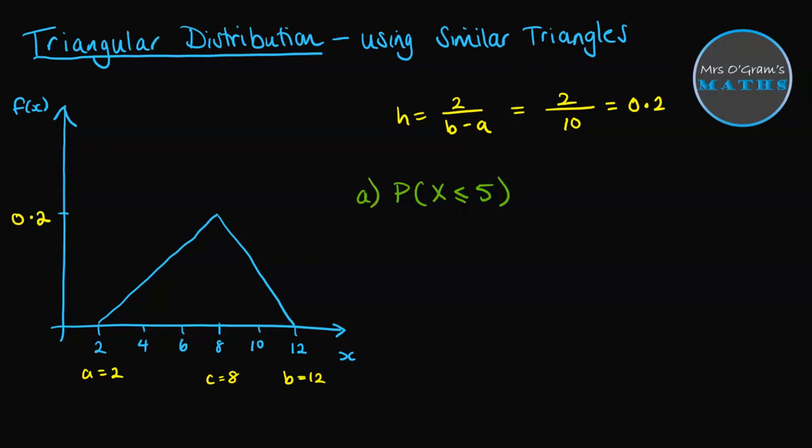All right, so let's go with this first question. What is the probability of x being less than or equal to 5? So here we've got a 5. We need to find out what that height is. We could use the formula that you looked at on the previous video, but let's take a look at how we could do this with similar triangles instead. So we have this height here, which is 0.2. We need to work out what the height is over here for this smaller triangle, and we can use the similar triangles to do it.